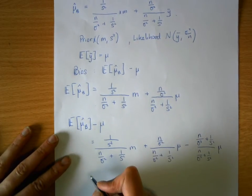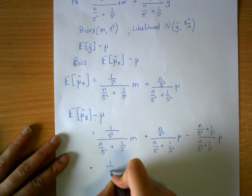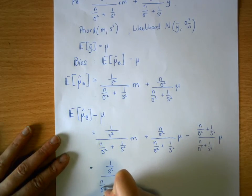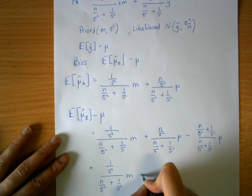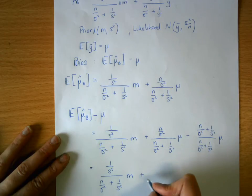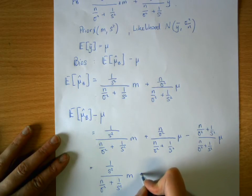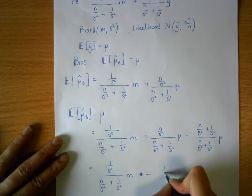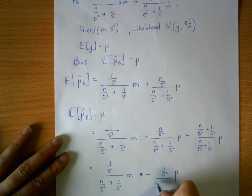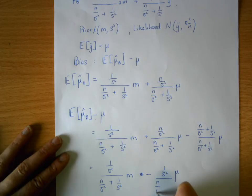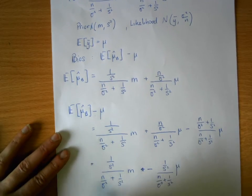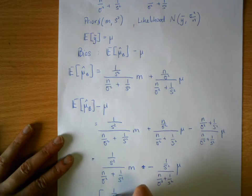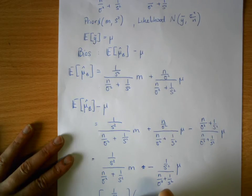Grouping like terms together: (1/s²) divided by (n/σ² + 1/s²) times m, and the remaining mu terms cancel, leaving a minus (1/s²) times mu divided by (n/σ² + 1/s²). These common terms group nicely to give (1/s²) divided by (n/σ² + 1/s²) times (m minus mu), where m is our prior mean and mu is the true mean.